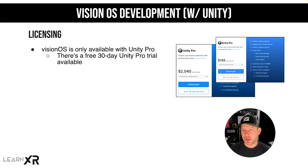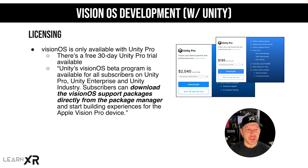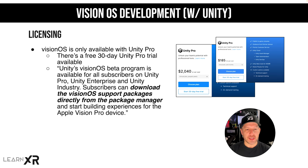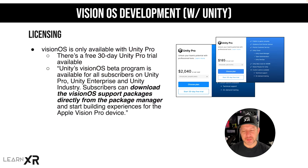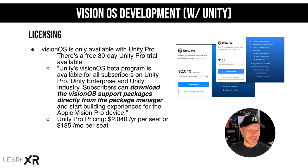The Unity VisionOS beta program is available for subscribers on Unity Pro, Unity Enterprise, and Unity Industry. Subscribers can download the VisionOS support packages directly from the Package Manager and start building experiences for the Apple Vision Pro. If you have a free or Plus version and try to install the packages, it might look like it's going to work, but Unity will give you a pop-up later saying you need to upgrade and will remove those packages. Trust me, I tried and it didn't work.